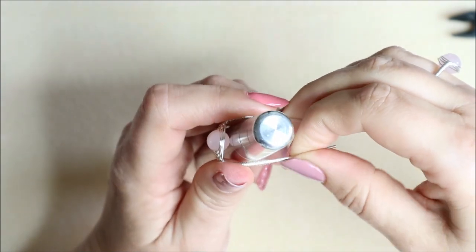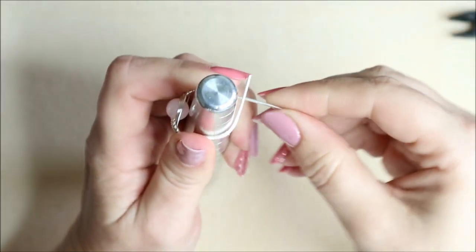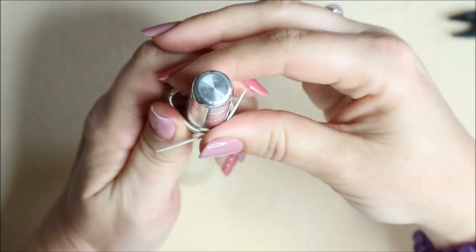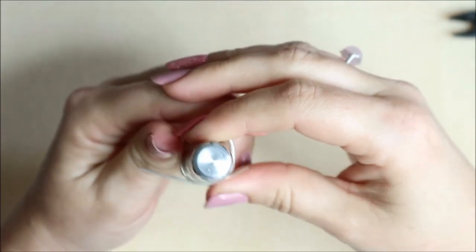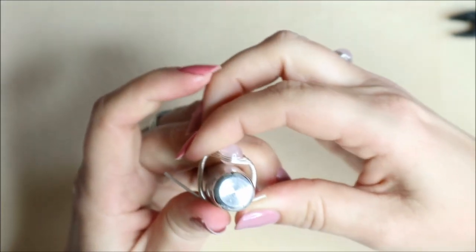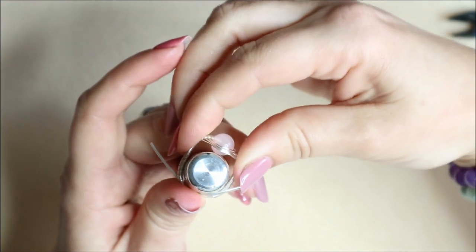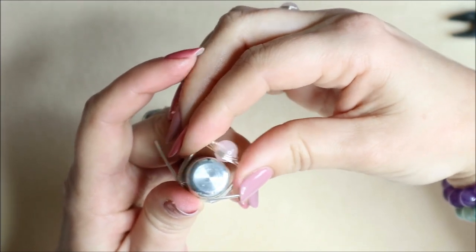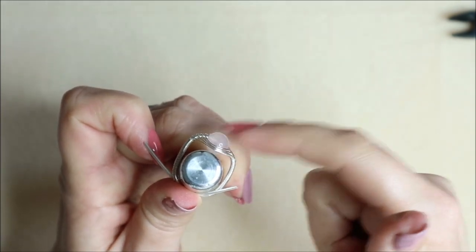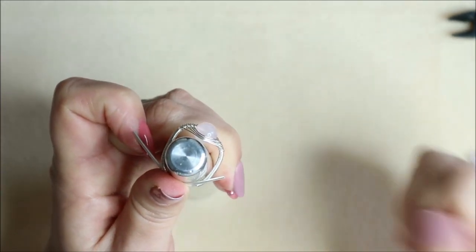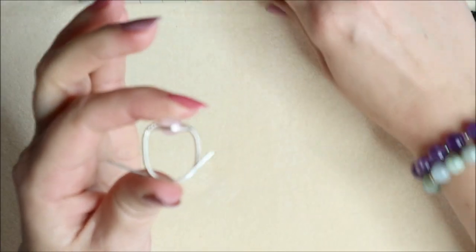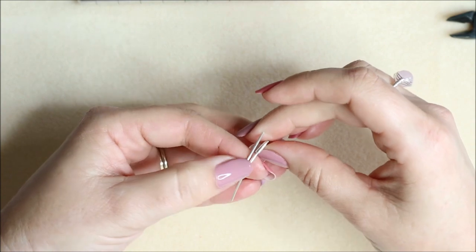Now we can bend these around like so until we get a nice shape around there. If it does come out of shape slightly, just adjust. But we want it to sit around. It's not going to sit in a perfect circle because we've got this gemstone at the front there, but that's the kind of shape that we're looking for.